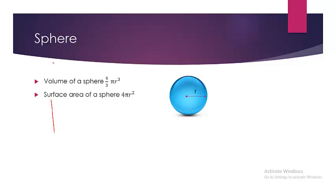Let us look at the sphere today. We will look at only theory, and the problems we will deal with in a separate video. In all these geometrical figures, we need to know two things: one is the volume of the sphere, and another one is the surface area of the sphere. If we know the volume and surface area of a geometrical figure, that will be sufficient for handling all the problems.